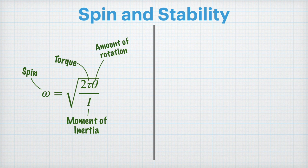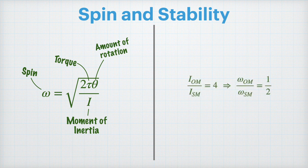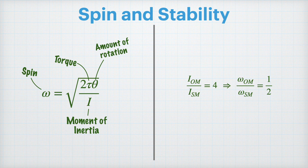Now more moment of inertia will actually decrease the spin due to that inverse relationship. To put this in perspective, if an overmold had four times the moment of inertia of a single mold, it would only have half as much spin off of an identical throw.